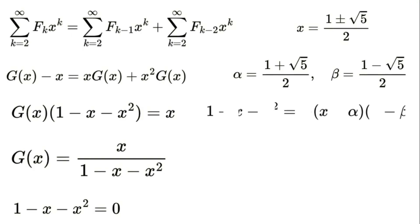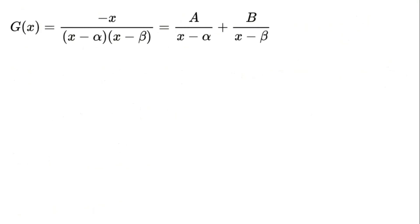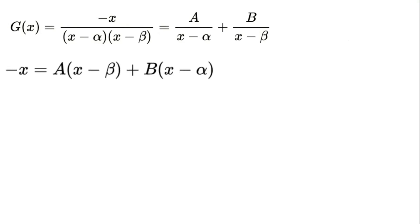Now that we have the generating function g(x) = -x / ((x - alpha)(x - beta)), we'll use partial fractions to break it into simpler terms. We write g(x) = A/(x - alpha) + B/(x - beta), where A and B are constants we need to find. To solve for A and B, we'll multiply both sides by (x - alpha)(x - beta), giving us -x = A·(x - beta) + B·(x - alpha).